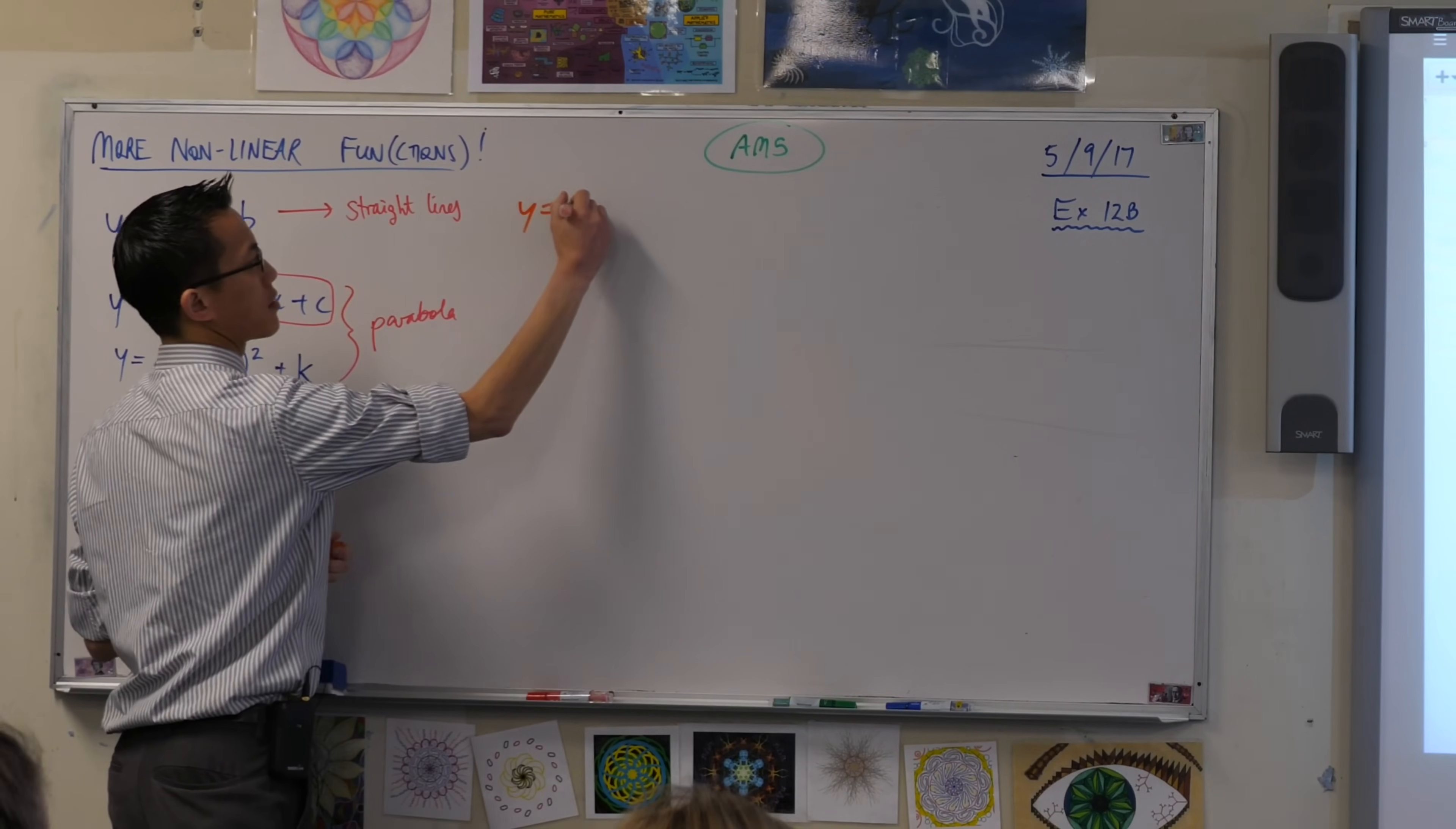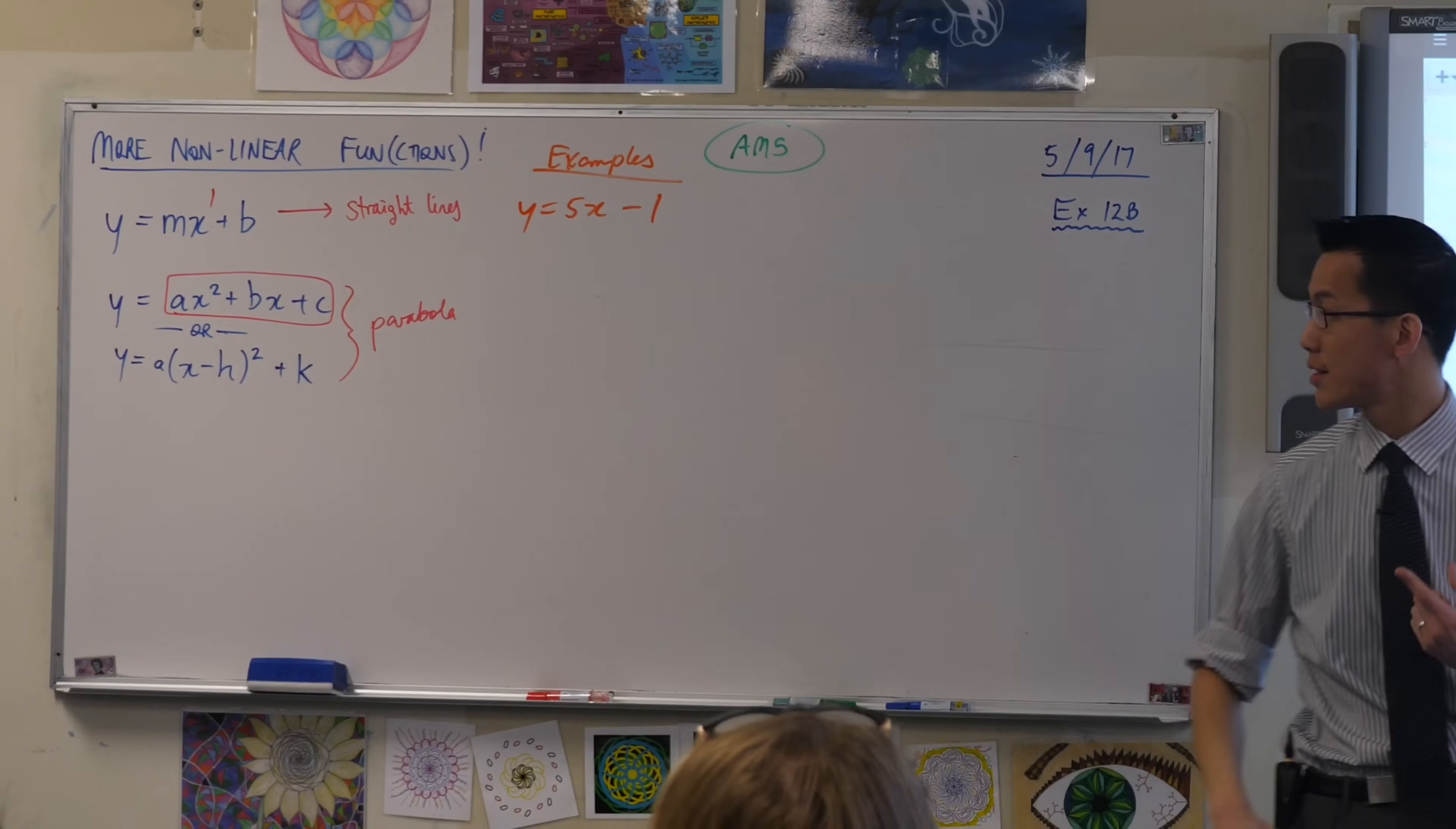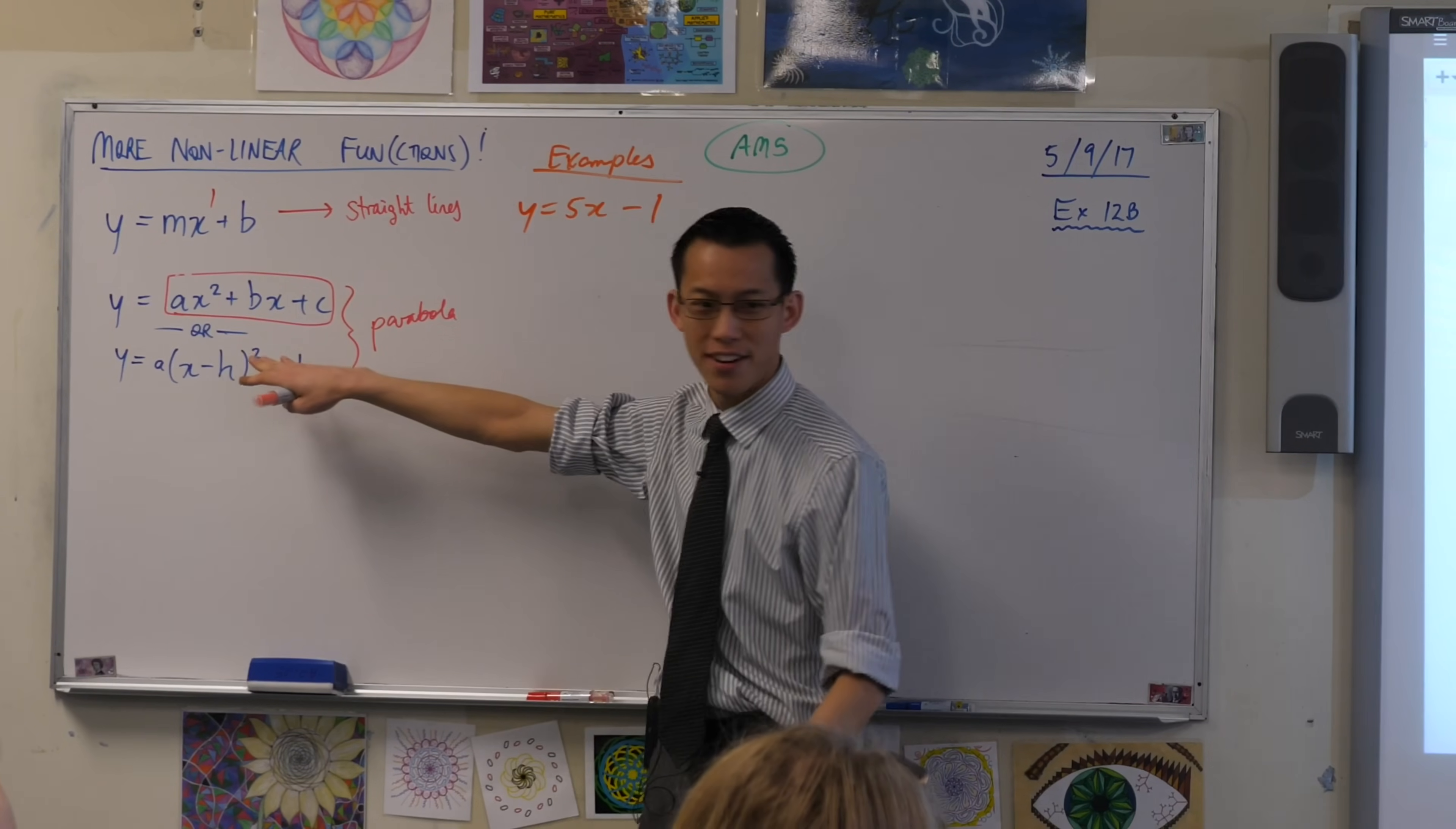m signifies gradient and b signifies the y-intercept. Very good. So when the equation is written in this form and you look at, I'll write an example over here. When you look at that, you can immediately know what the gradient is. It's going to be 5. And you can immediately know what the y-intercept is going to be. Negative 1, very good. So that's what this form is sort of geared for.